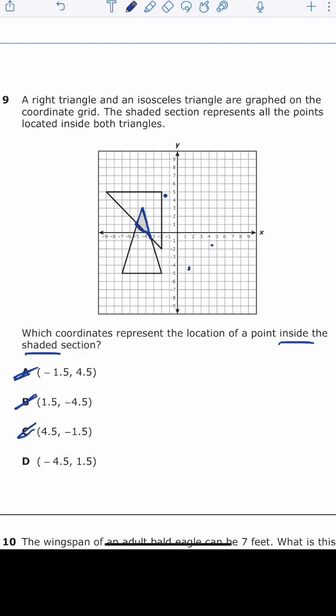And then letter D is negative 4.5 to the left and 1.5 up. And if we graph that, that's going to be right inside that shaded section.